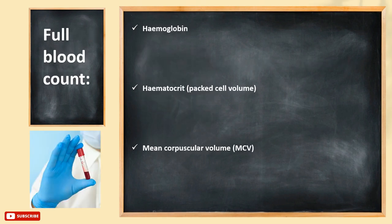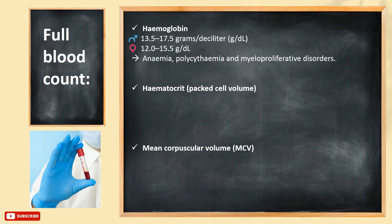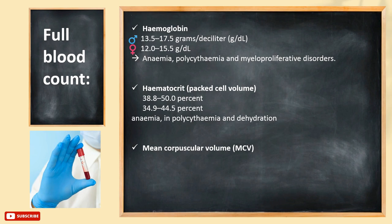Full blood count, or complete blood count, also called CBC. Firstly, hemoglobin — it is the protein that holds oxygen in the red blood cells. Here is the normal range, which varies between males and females. Hematocrit means how much of your blood is made up of red blood cells. A low score may be a sign that you do not have enough iron, and a high score could mean that you are dehydrated or have another condition.